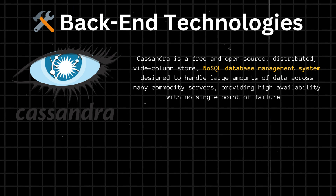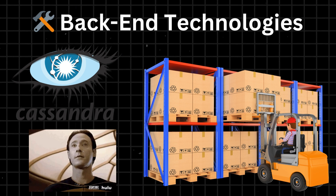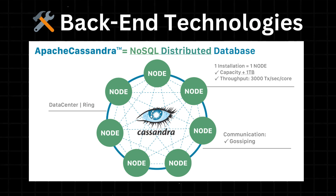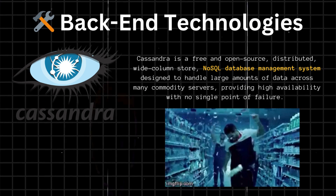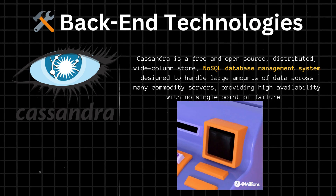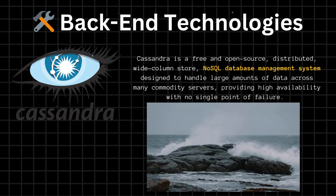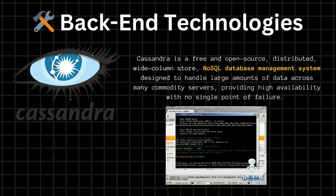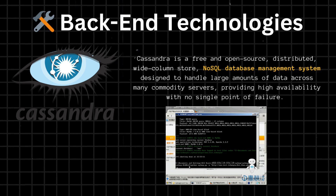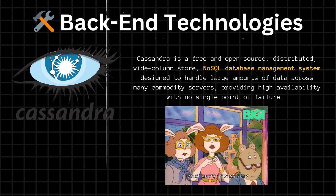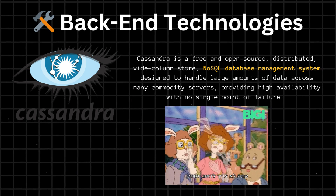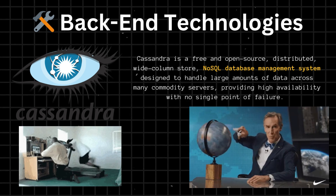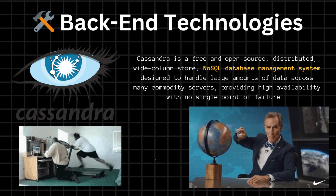Cassandra. Spotify uses Cassandra to store its music catalog and user data, including playlist information, user preferences, and listening history. Cassandra allows Spotify to store and manage massive amounts of data across multiple servers, essential for serving millions of users worldwide. Spotify can easily add new servers to its cluster as its user base grows without worrying about data consistency or availability. Cassandra's ability to replicate data across multiple servers also ensures the data is always available, even if one or more servers fail.